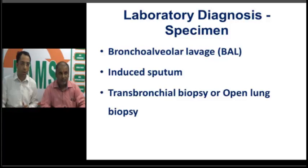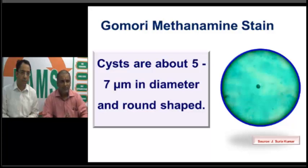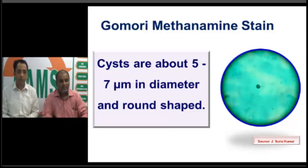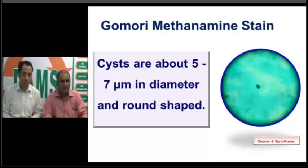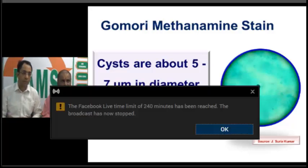Once the bronchoalveolar lavage specimen is obtained, because Pneumocystis is a non-cultivable fungus, we cannot culture it. We perform a Gomori methenamine silver (GMS) stain — a fungal stain where the silver is reduced and the cell wall takes on a black color appearance. The cysts are 5 to 7 micrometers in diameter, similar to RBC size, and are round or cup-shaped. In this patient, we see the typical cup shape with a small dot-like structure in the center against a green background, representing the cysts of Pneumocystis. This is very specific and diagnostic — confirming the patient has Pneumocystis pneumonia.